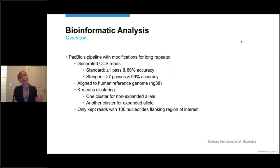This is an overview of our bioinformatic analysis. We used PacBio's pipeline with modifications for long repeats, starting with the generation of CCS reads, circular consensus sequencing reads. And you might already be familiar with those reads. So basically, you sequence the same piece over and over again, thereby increasing the accuracy. And as you probably understand, we had two goals. We wanted to look at the length of the expansion, as well as the presence of interruptions.